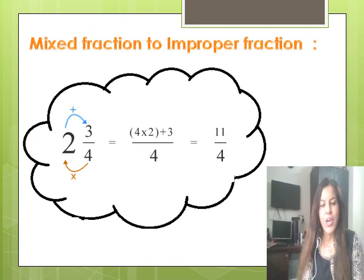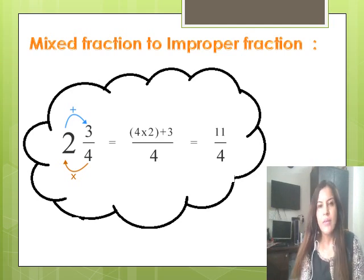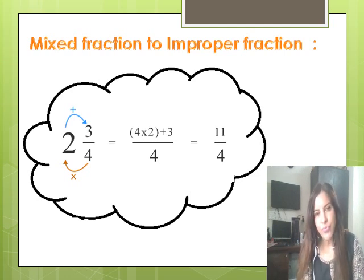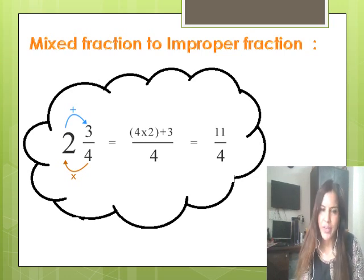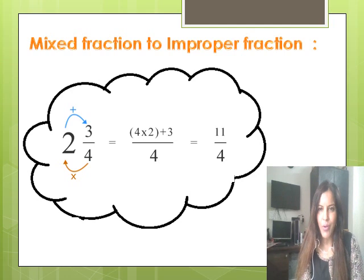Now what have we learned about how to convert a mixed fraction to an improper fraction? Look at this example: two and three by four, where two is the whole number and three-fourth is the proper fraction. To convert, you need to find the new numerator — the denominator remains the same. Multiply the whole number with the denominator and add the numerator to it. So 2 × 4 = 8, plus 3 equals 11, which is the new numerator, and the denominator is 4 which remains the same. So this is how you convert a mixed fraction to an improper fraction.